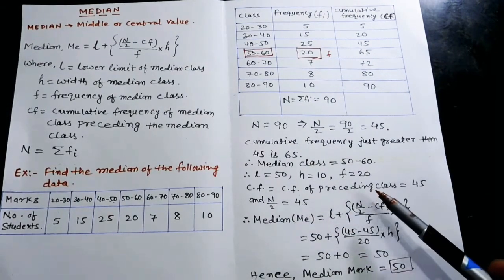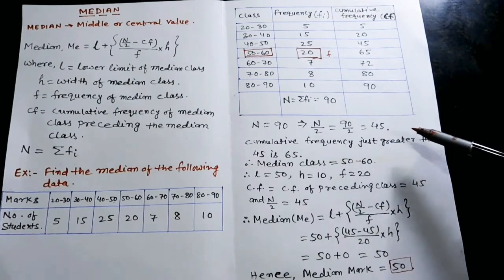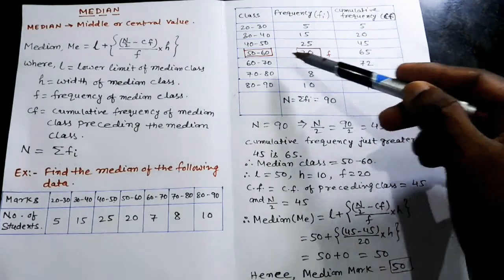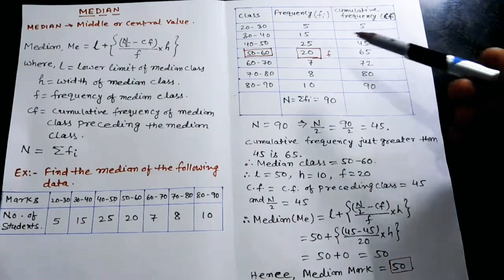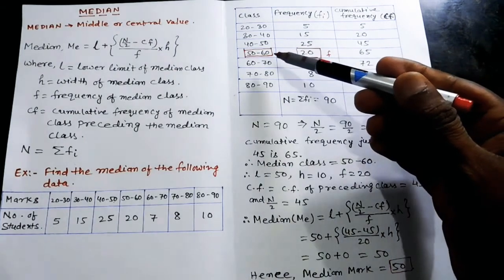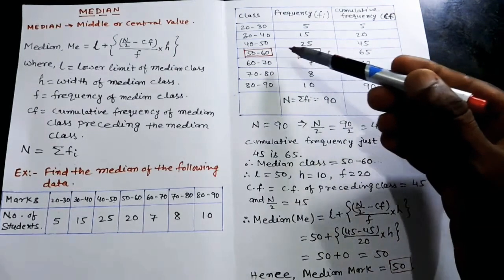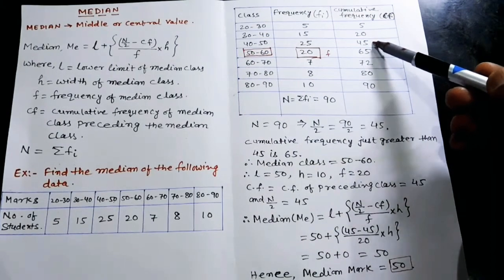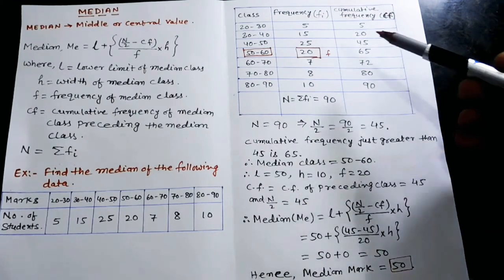CF is the cumulative frequency of the class preceding the median class. The median class is 50–60, so the preceding class is 40–50, whose CF is 45. Therefore CF = 45. N/2 is also 45.